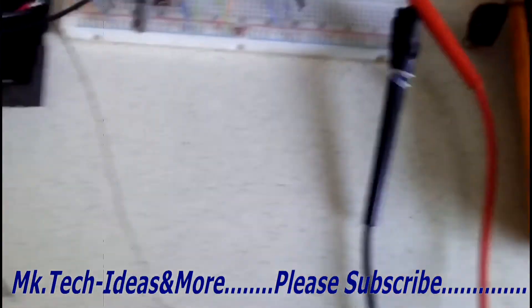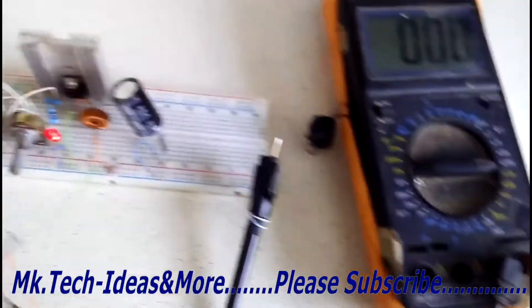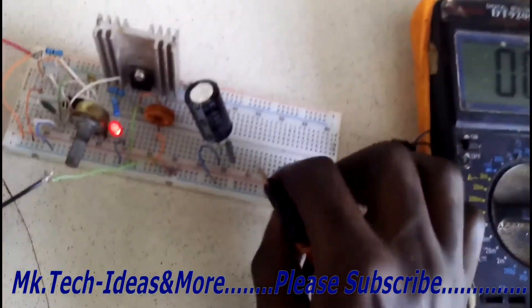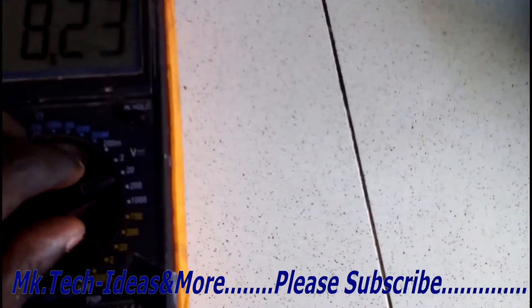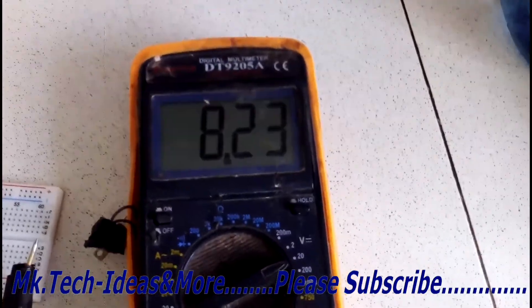So I'll begin by testing the battery voltage. I'll connect the battery and as you can see here, the voltage is 8.2 volts. The voltage is 8.2 volts for the input. Let's see the output voltage.